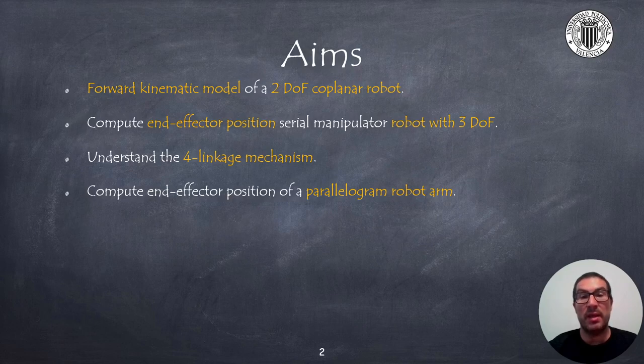Next, we will compute the end effector position of a serial manipulator with 3 degrees of freedom, and also we will study the forward linkage mechanism. Finally, we will see how to compute the position of the end effector of a parallelogram robot arm, which combines the structure of the 3 degrees of freedom serial robot with a forward linkage mechanism.